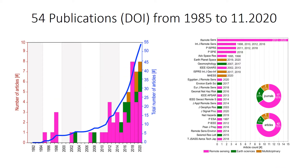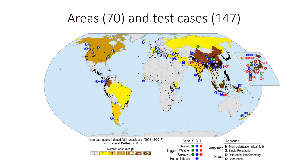We found and reviewed 54 papers with digital object identifiers, mostly published in journals with a clear remote sensing orientation. The number is limited but increasing. Overall, we examined 147 case studies in 32 nations, in all continents except Antarctica.